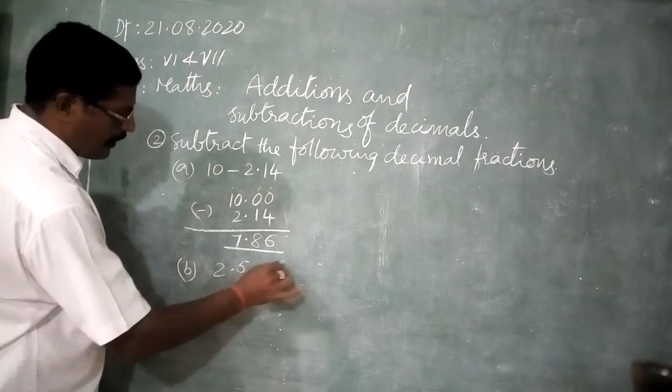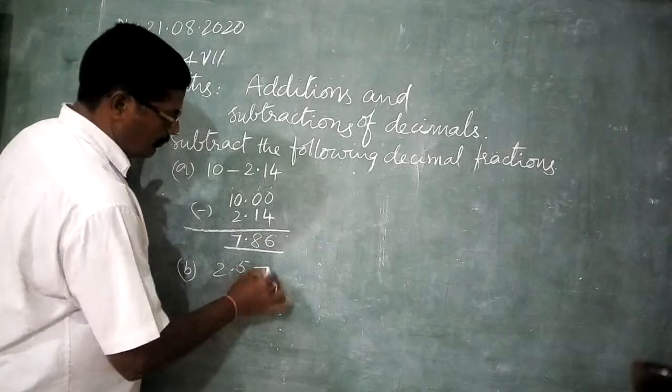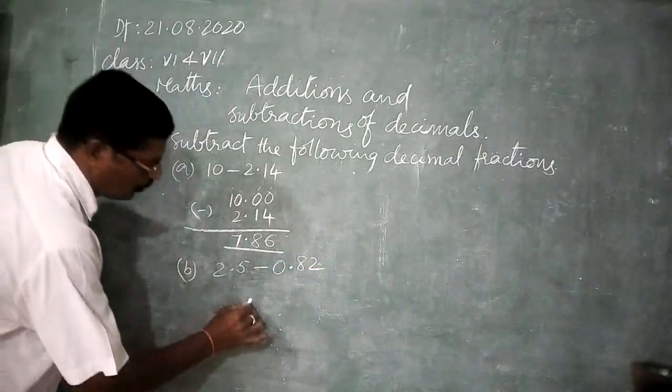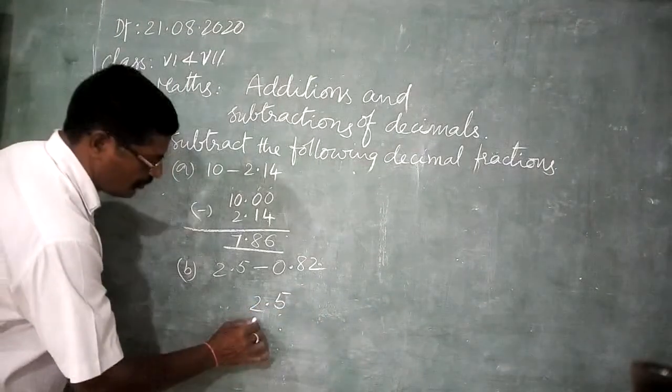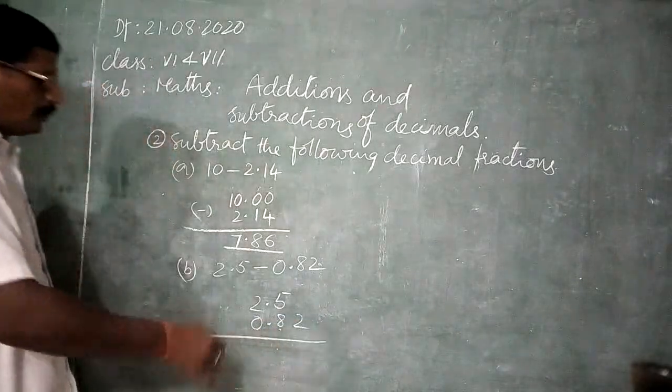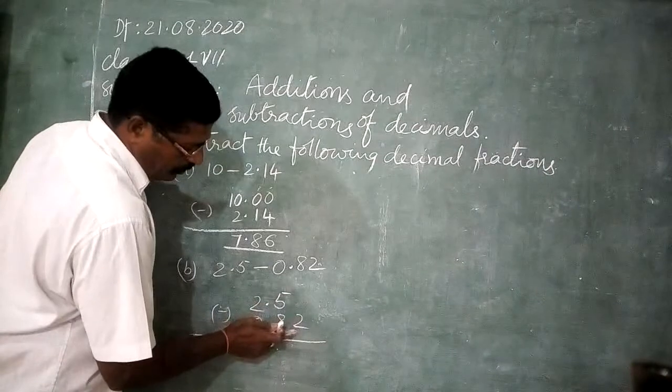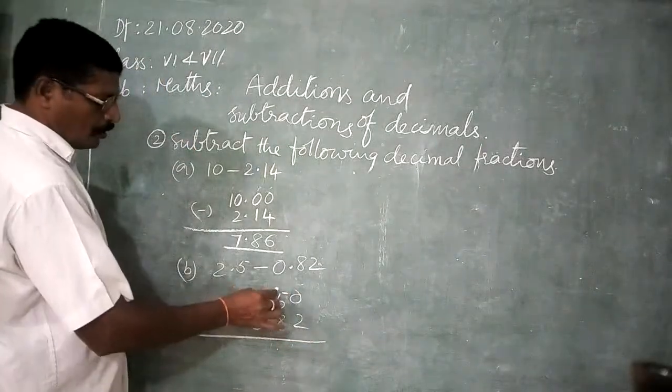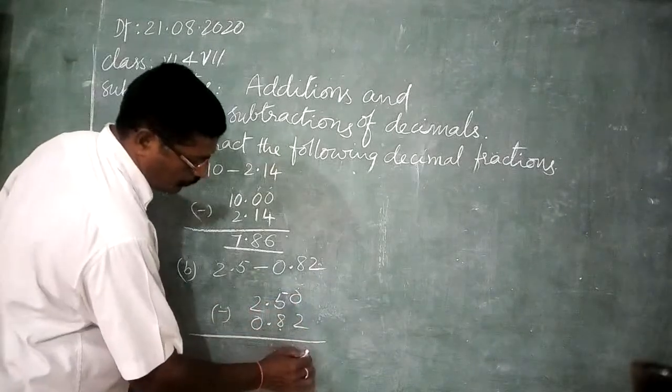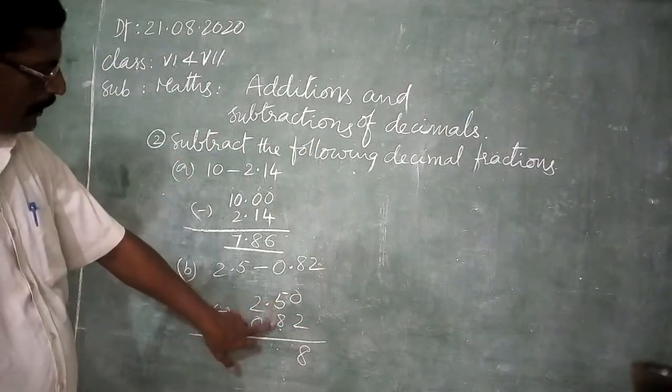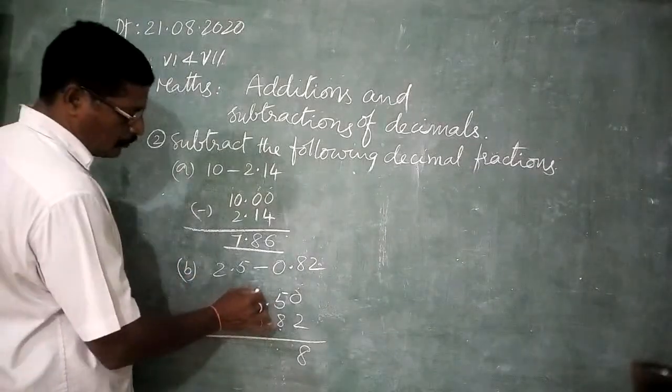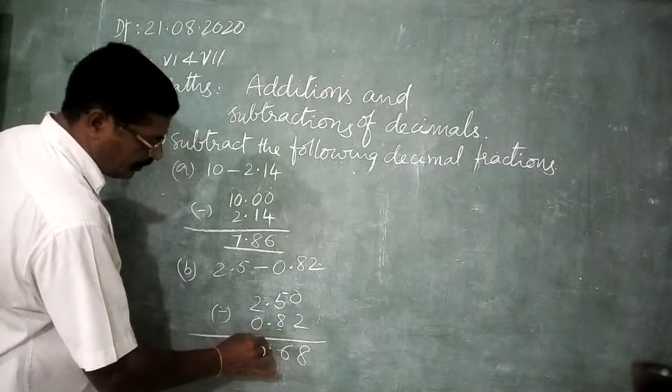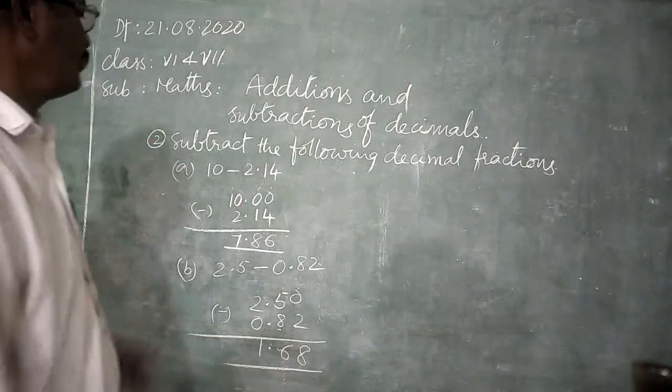2.5 minus 0.82. 2.5, next then 0.82. Subtraction. How to subtract? Here this is the 100th place. This here there is no 100th place. So put 0 here. Now borrowing from here to here. 10, 10 minus 2, 8. Here remaining 4 only. But here is 4, 8. So subtract. Borrowing from here to here. How much? 14 minus 8, how much? 6. Here remaining 1. 1.68 is the answer. One more question.